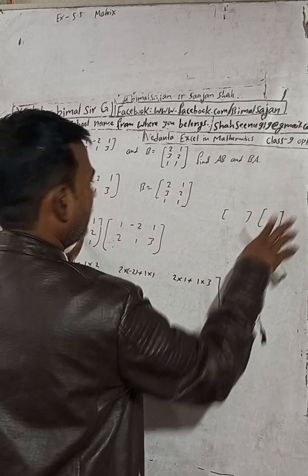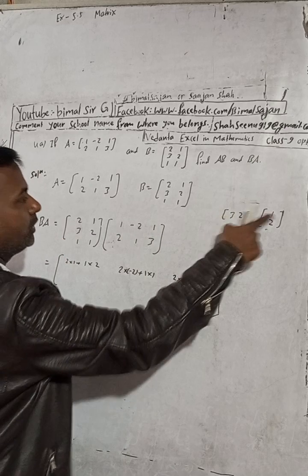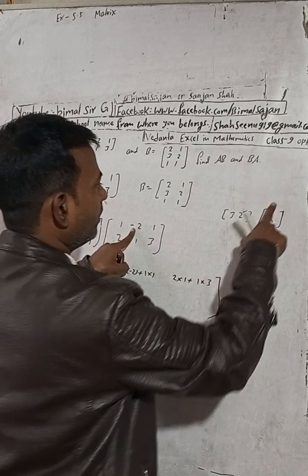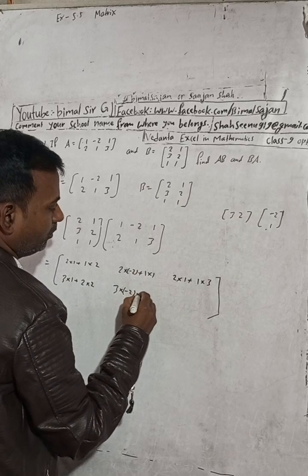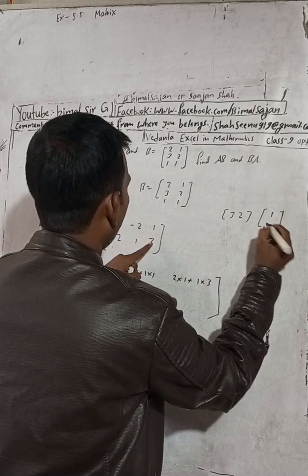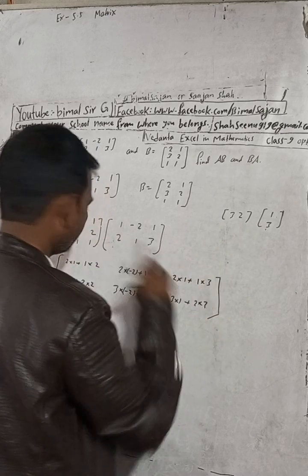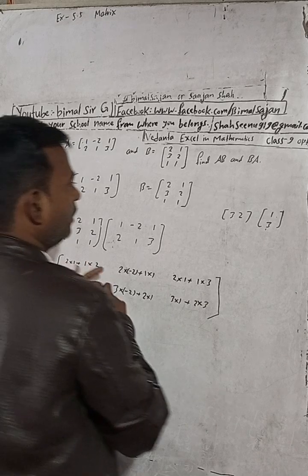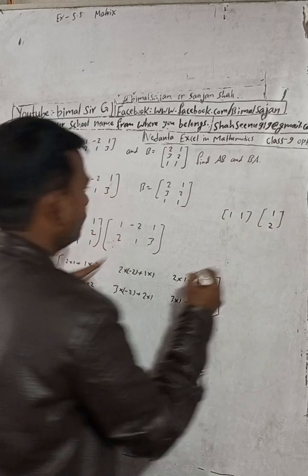Second row of B: 3, 2 with first column of A: 3×1 + 2×2. Second row, second column: 3×(-2) + 2×1. Second row, third column: 3×1 + 2×3. Third row of B: 1, 1 with first column of A: 1×1 + 1×2.